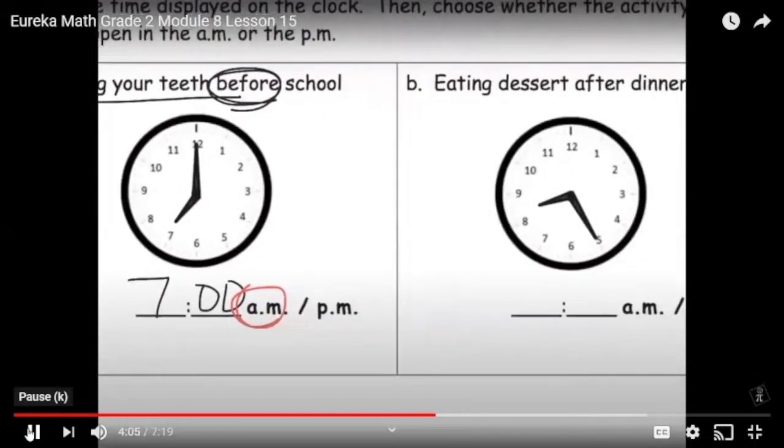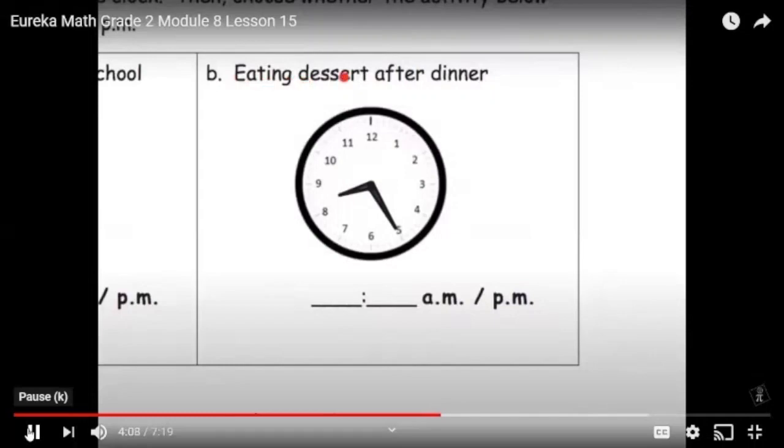And if we want to, we could say, well, what about eating dessert after dinner? So the idea would be, well, we're kind of thinking about after dinner. So that's going to be a PM. And looking at our clock, well, we see that the minute hand is at, starting at 12, you go 5, 10, 15, 20, 25. So that's 25 minutes. And we can see that the hour hand is between the eight and the nine. So we know that that's going to be eight o'clock. So it's 8:25. And we know it's 8:25 PM because we're doing something after dinner.